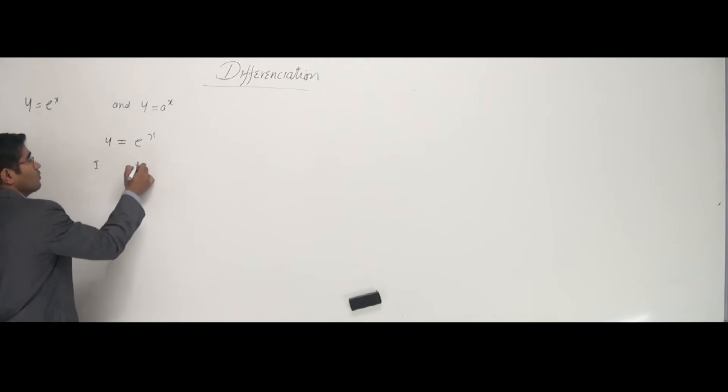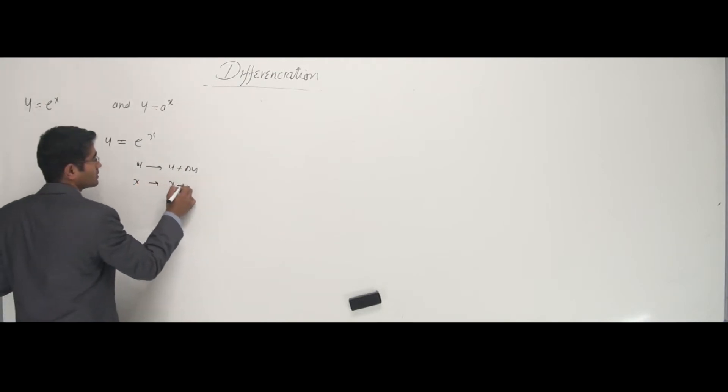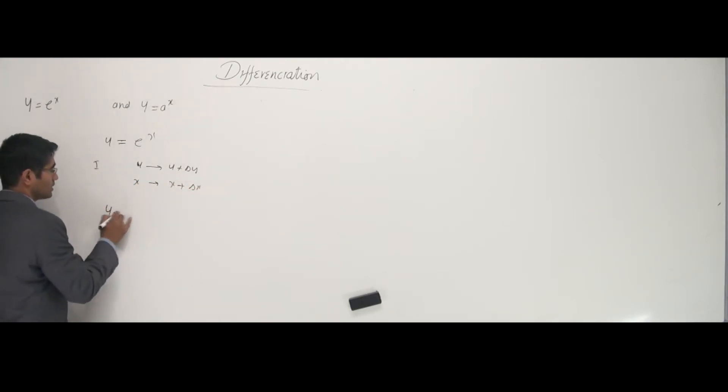What's the first stage? It says y should become y plus delta y, and x is incremented to x plus delta x. What happens here? So I get y plus delta y is equal to e power x plus delta x.